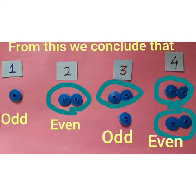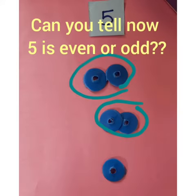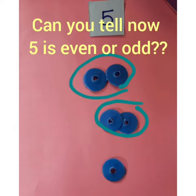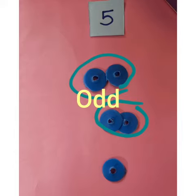So from this we are able to tell whether 5 is odd or even. Yes, of course — as 1 is left here, so it is an odd number.